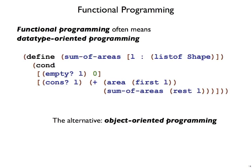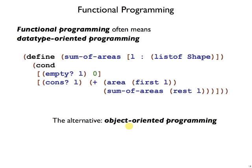And an alternative to data-type oriented programming is object-oriented programming. So here again is an example of data-type oriented programming, where I have the programs area and perimeter. And what data-type oriented means is we call an operation with a particular variant, and the operation figures out what variant it has, this case dispatch.